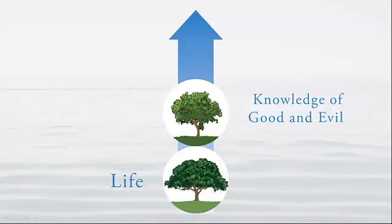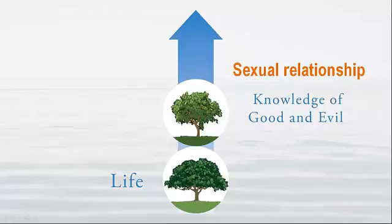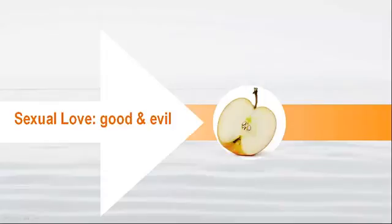And what about the Tree of Knowledge of Good and Evil? In Scripture, the word "knowledge" has two meanings. It can mean that you know something, or it can also mean that you had a sexual relationship with someone. Scripture offers examples of this: Adam had knowledge of his wife Eve, and she conceived Cain. Cain had knowledge of his wife, and she conceived Enoch. Adam had knowledge of his wife again, and she conceived Seth. Knowledge, meaning sexual love, can be good and it can be evil. That is why it is the Tree of Knowledge of Good and Evil.